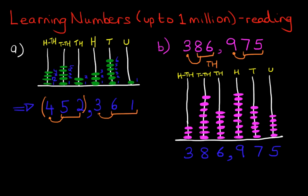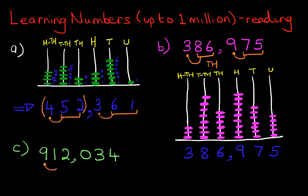We're going to finish off by reading one final number — I'm going to write it down. How would you say that? Read it aloud. Let's work through it. Start on the left: we've got nine hundred and twelve thousand. And then we say 'and' because there are no hundreds. Nine hundred and twelve thousand and thirty-four. So that is numbers up to one million.